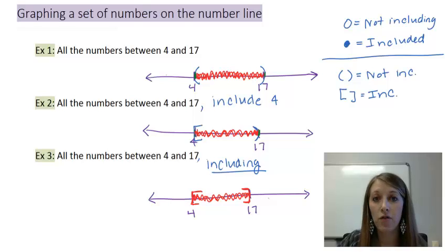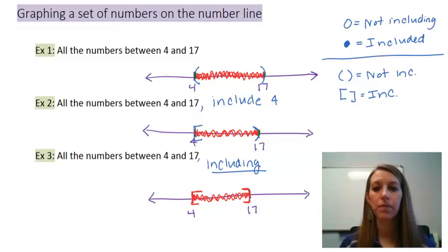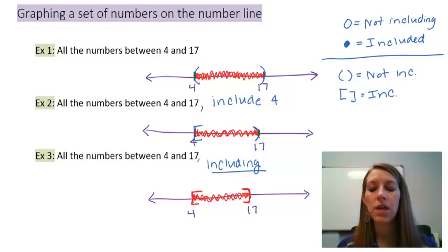This is an example of graphing the numbers on a number line. This is where I'm going to end notating a set of numbers part 1 video where we went over what notating a set of numbers actually means, and we talked about how to graph those set of numbers on a number line. In the next video we're going to talk about interval notation and set builder notation, the other two ways to notate a set of numbers.